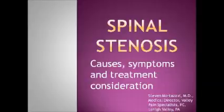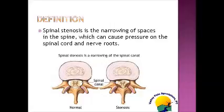Spinal stenosis is defined as a narrowing within the canal of the spine, either in the cervical, thoracic, or lumbar area, which can cause pressure on the spinal cord and the nerve roots. The picture on the left shows a normal spinal canal with the spinal cord intact, whereas the picture on the right shows a narrowed or stenotic spinal canal.